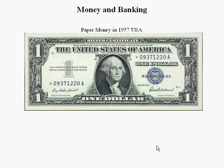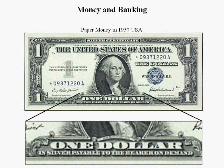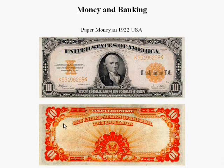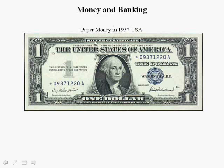Here is a $1 bill from 1957. It says in very small font, '$1 in silver payable to the bearer on demand.' Now, if we go back in time, earlier bills were heavily themed around gold — the color was gold, and gold was printed all over them. By 1922, gold appeared in smaller font on the front and fairly small on the back, though the back color was still gold-like. By 1957, it references silver, but the font is very, very small.